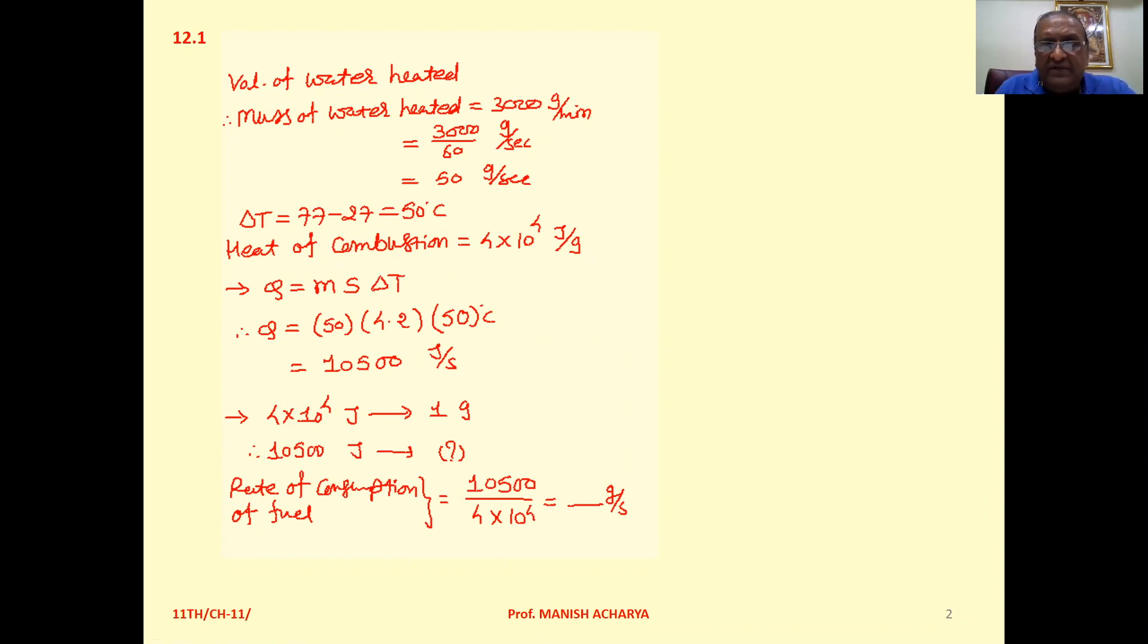Now, we know the amount of heat required to raise the temperature of M gram substance by delta T that is Q equal to M S delta T where S is the specific heat. So Q that is mass 50 grams, S 4.2, delta T 50. So answer that is 10,500 joules per second.